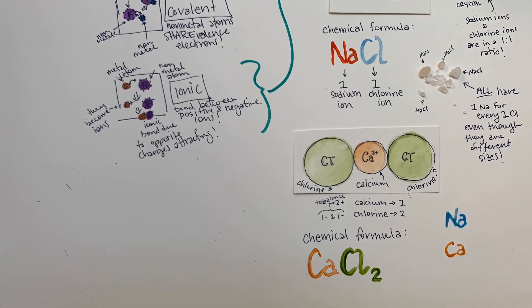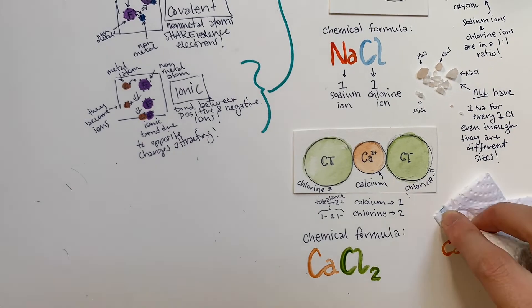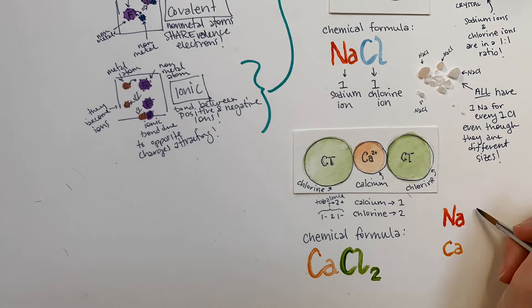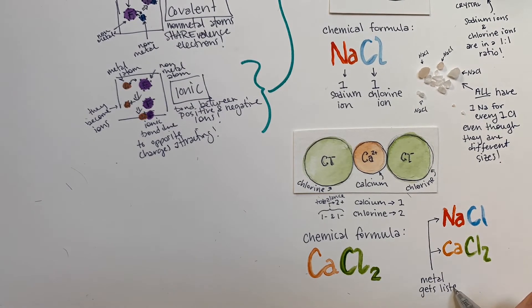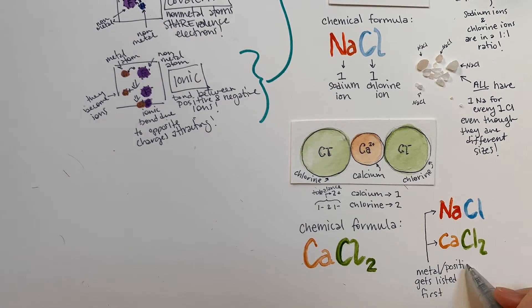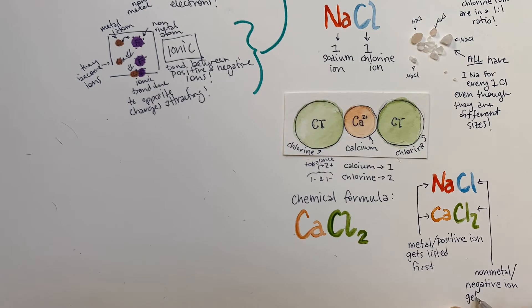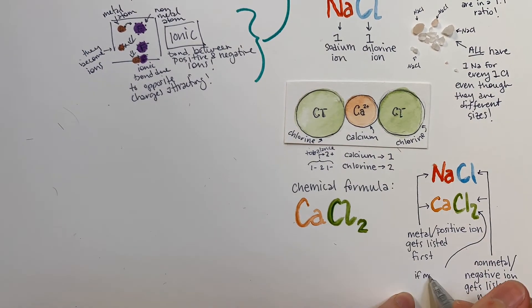You'll notice in both of these examples for ionic compounds, we listed the metal first, followed by the non-metal. So that we can make sure that everyone is communicating in the same way, someone a long time ago decided that when you write ionic compounds, you always list the metal or positive ion in the formula, and then you list the negative ion.